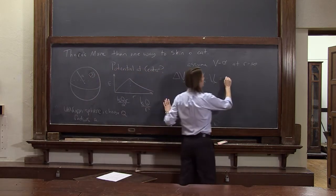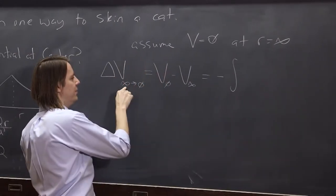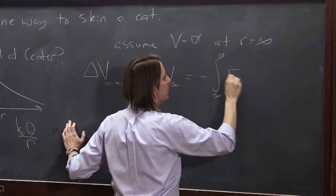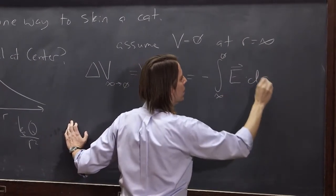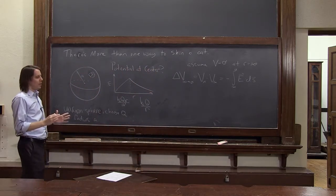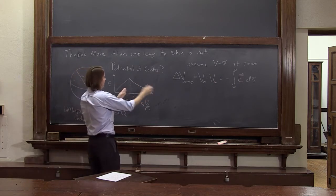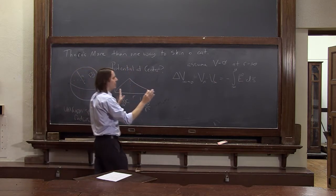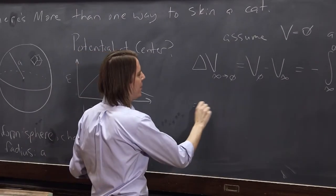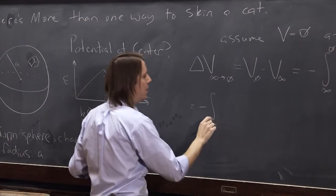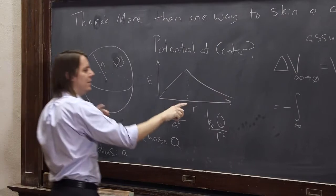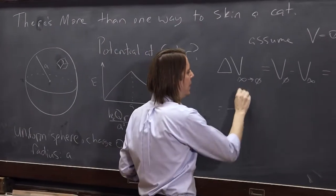So we just have to write that integral. Delta V is minus the integral from infinity to zero of E dot DS. Now we have to plug in for E. We have two domains. The good news is this is an integral, an integral is a sum, so you just break it up into two sections. So this is equal to minus the integral from infinity to A. We're going all the way from infinity to come up to the surface. Infinity to A.